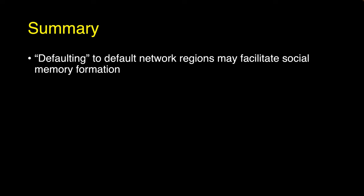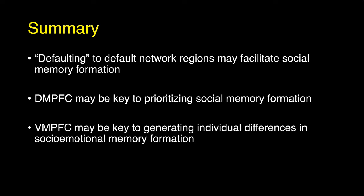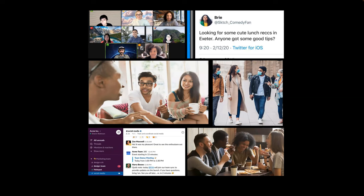To summarize those two studies: we're seeing initial evidence that defaulting to default network regions may facilitate how we form our social memories. The DMPFC might be really key to prioritizing social memory consolidation broadly construed. The VMPFC may be key in contrast to generating individual differences in the socio-emotional memory consolidation process. The truth is we have way more to figure out. Forming memories of everyday experiences is super important, no doubt, but it's certainly not the only thing that helps ensure we're socially savvy. I suspect it's not the only thing the default network is doing that's promoting sociality, so my lab is really interested in drilling down to figure out all the different things that might be important in addition to social memory consolidation.